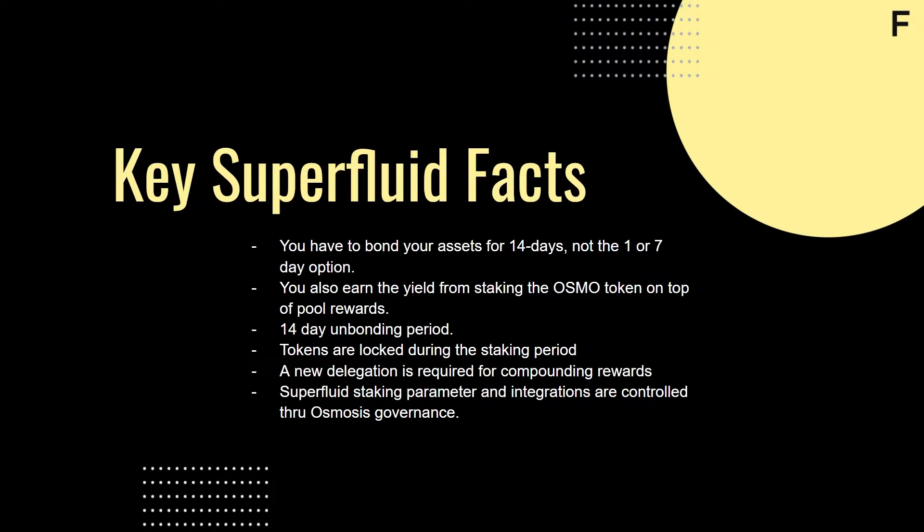Once this is done, the superfluid option will unlock and you'll be able to select a validator to stake with, since you're actively securing the network by staking. When you provide liquidity as an LP, you only earn fees and liquidity mining incentives from swaps in the pool you're providing to.